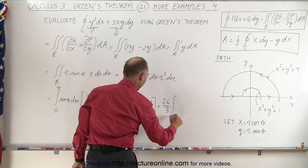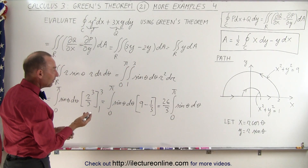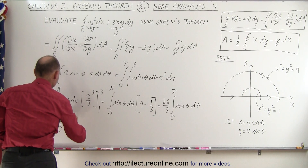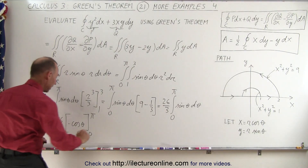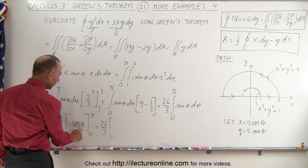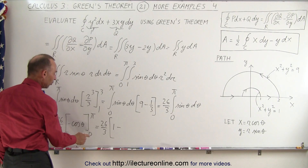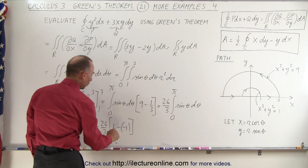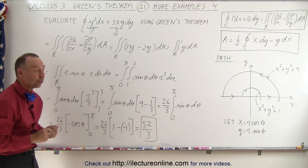So this becomes 26 over 3 times the integral from 0 to pi of the sine of theta d theta. The integral of the sine is the negative cosine, so this becomes equal to 26 over 3 times the negative cosine of theta evaluated from 0 to pi. Plugging in the upper limit, the cosine of pi is negative 1, but with the negative in front that gives a positive 1. Minus plugging in the lower limit, the cosine of 0 is 1 but with the negative in front it's minus a negative 1. So 1 plus 1 gives 2, and 2 times 26 is 52, divided by 3. That is the result of the line integral.